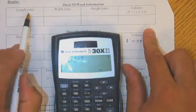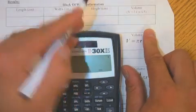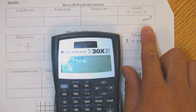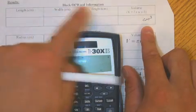And since this one was in centimeters, centimeters, centimeters, my unit will be cubic centimeters or centimeters cubed. Okay, because I had centimeters three times.